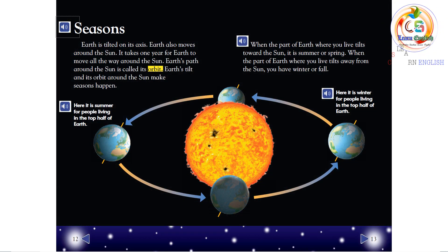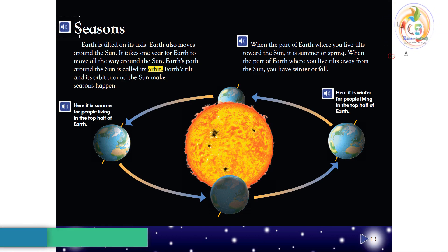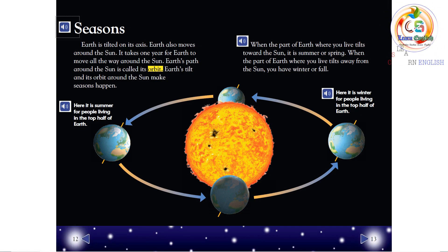Seasons. Earth is tilted on its axis. Earth also moves around the Sun. It takes one year for Earth to move all the way around the Sun. Earth's path around the Sun is called its orbit. Earth's tilt and its orbit around the Sun make seasons happen.